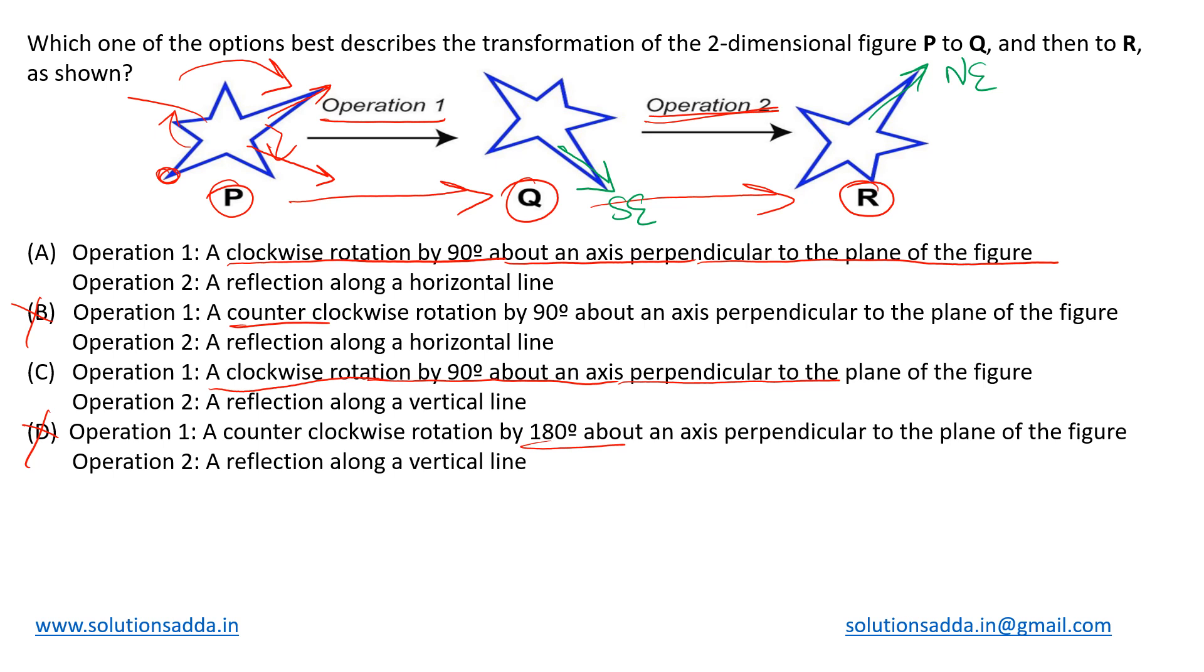But if that were the case, then P and R should have been the same, because first we are rotating 90 degrees clockwise, then we rotate 90 degrees anticlockwise, then Q should again convert into P, right?